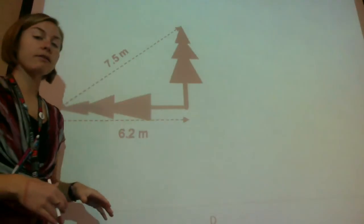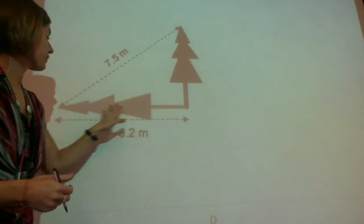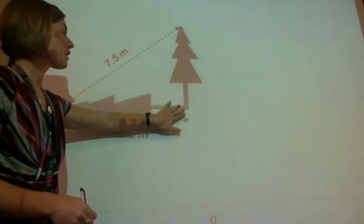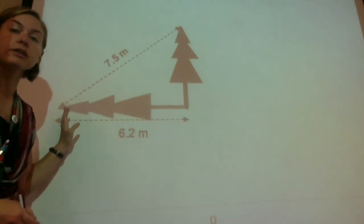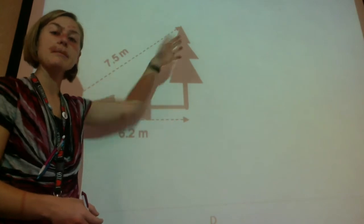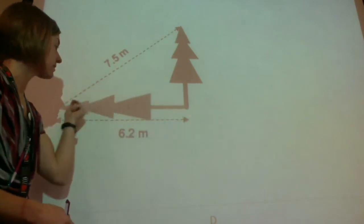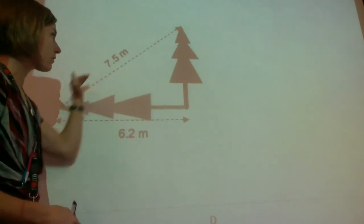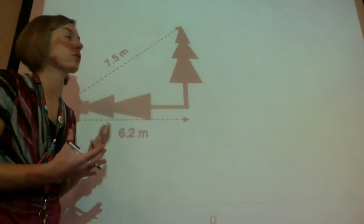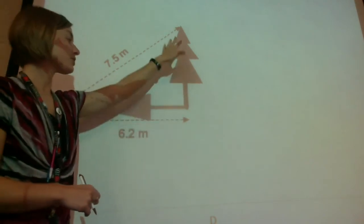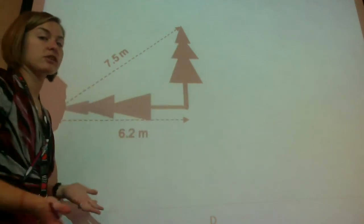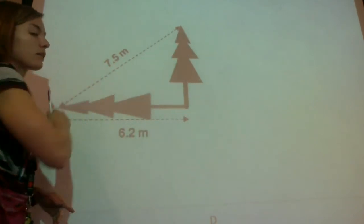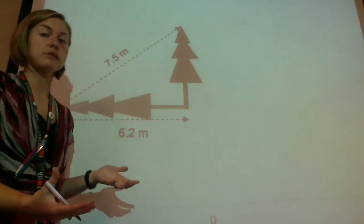Here we have a tree and its shadow. We're trying to figure out the height of the tree based upon the length of its shadow. People actually really do this — there are trees that are way too tall to climb, so we can use math to figure out the height based on its shadow and the angle the sun is coming at. So here again, we just have a right triangle with one side length, a missing side length, and the longest side length.